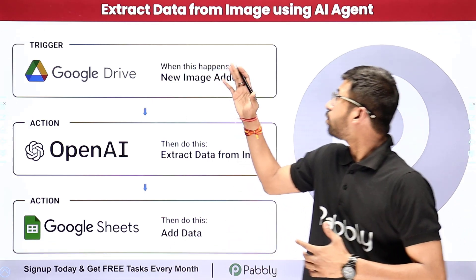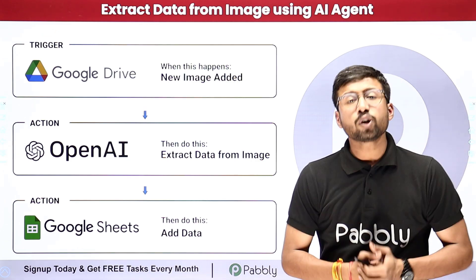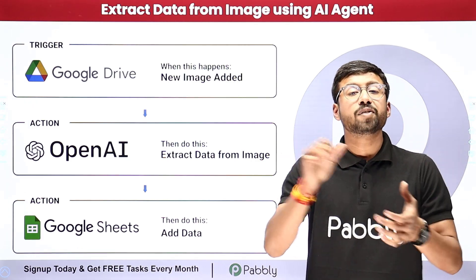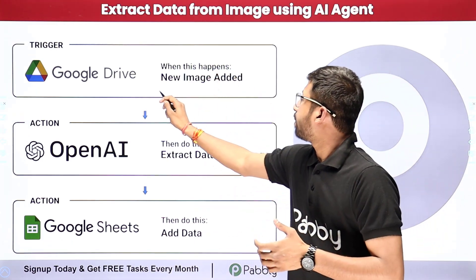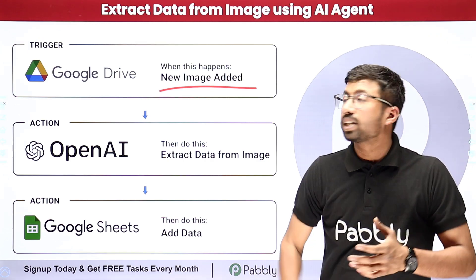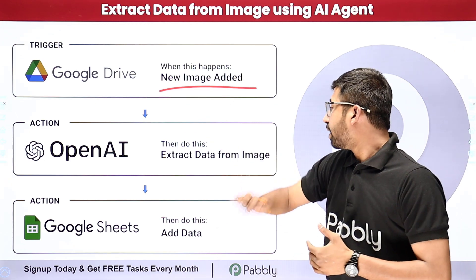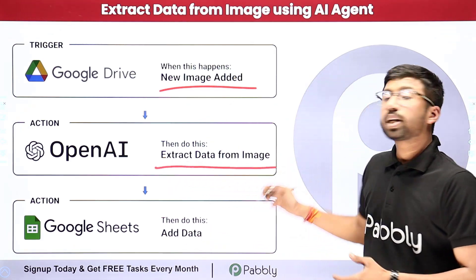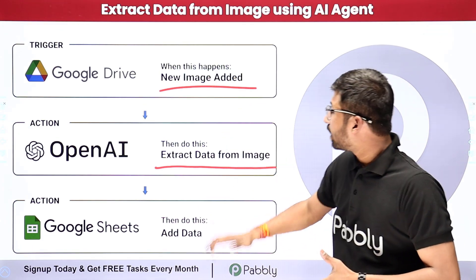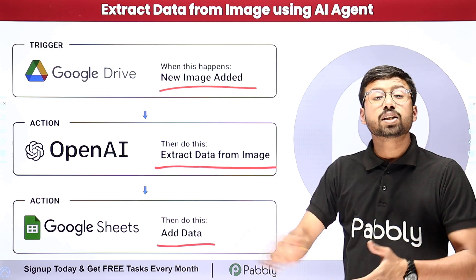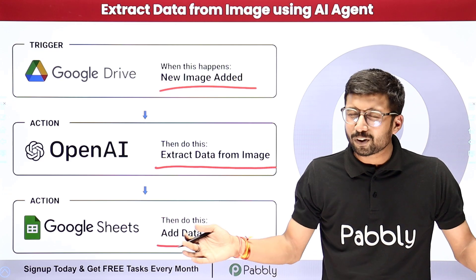In this video we are going to learn how to extract data from an image using an AI agent. We are going to build an AI agent using which you can extract data from images you upload to your Google Drive. All you have to do is upload the image in your Google Drive folder and this AI agent will get those images, send them to OpenAI to extract the text content, and then add that data into a Google spreadsheet.